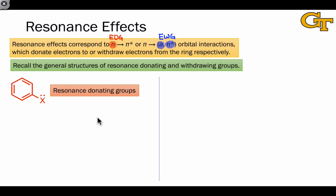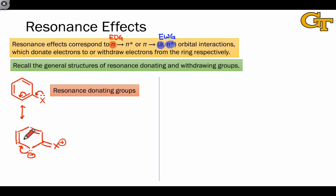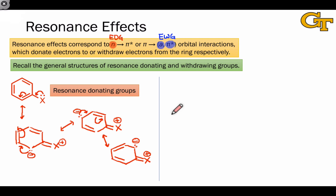Where I want to focus for the rest of this slide is on the general structures of resonance donating and withdrawing groups and the resonance forms that come from engaging the substituent in resonance. In the donating case, we have a lone pair on an atom directly connected to the benzene ring. That means we can push electrons in an n-to-pi-star fashion to generate a new resonance form. We can continue the electron flow to generate a second and then a third important resonance form. These resonance forms tell us that the ring is more electron-rich than benzene itself, since we can draw a resonance form with negative charge within the ring without a compensating positive charge within the ring. The implication is that rings substituted with resonance donating groups are electron-rich.